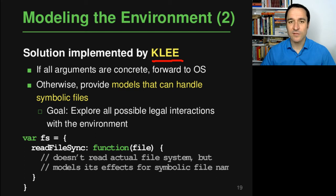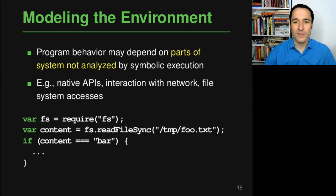It does it in two possible ways. If you're interacting with the file system and all arguments of these API calls that you're doing are concrete, so you basically know what their values are, then you can just forward this to the actual operating system. So this is the first case where, for example, if you go back to the previous example, if you would read from this file name and this file name is a concrete value because it's given as a string literal here, then it would just look up this file on the file system and actually return whatever this file is returning.